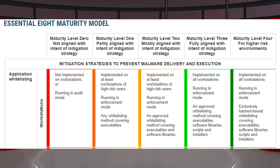Maturity level one means you're partly aligned, maturity level two means you're mostly aligned, maturity level three means you're fully aligned, and maturity level four is really for high-risk environments. As a baseline, organisations should aim to reach maturity level three for each mitigation strategy.